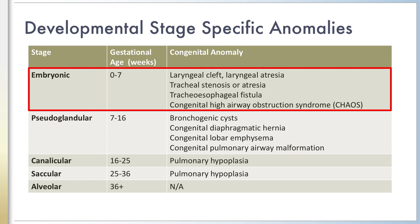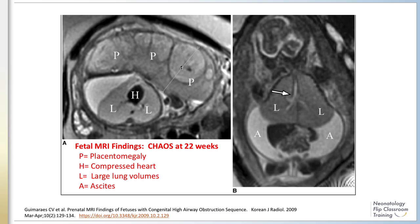In addition, during the embryonic phase, abnormal partitioning of the primitive foregut into trachea and esophagus can result in tracheoesophageal fistula.